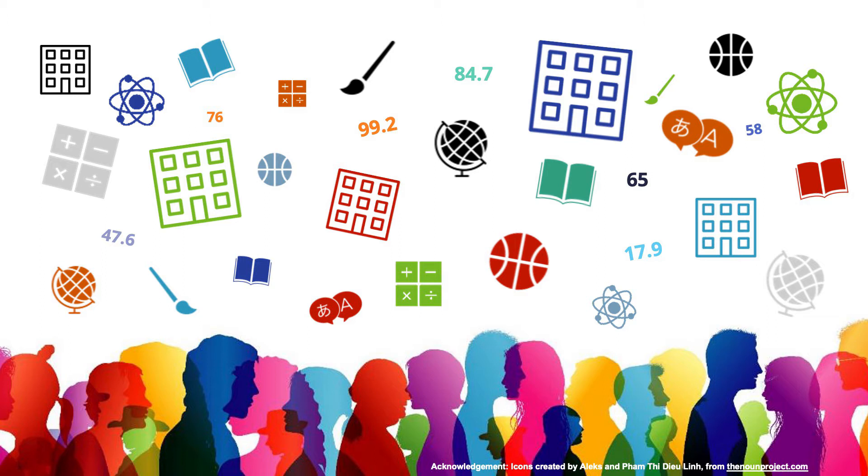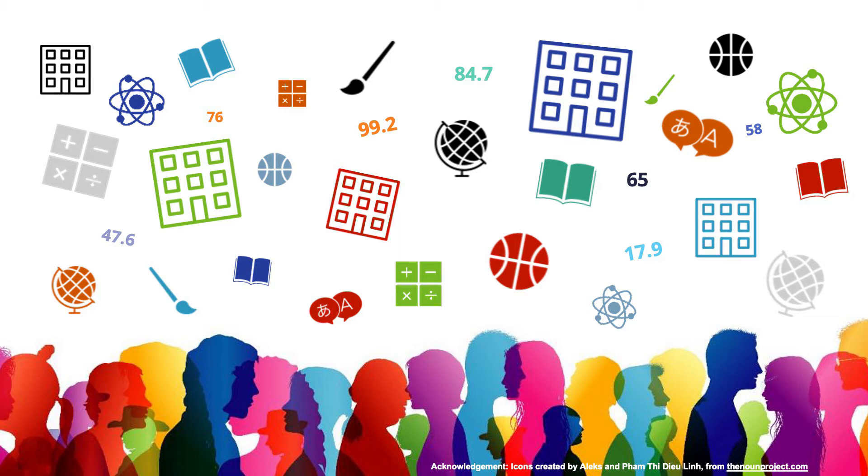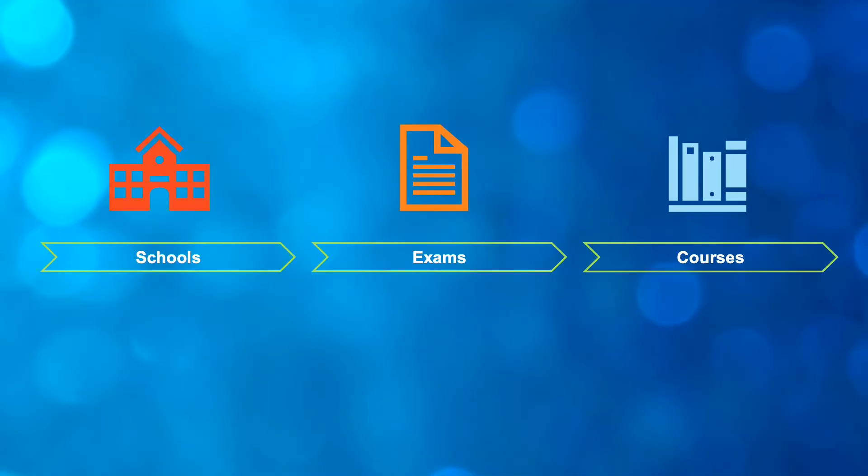I talked in a previous video about the ATAR that a lot of what we're doing is about comparing your performance this year to the performance of everyone else in WA. The marks adjustment processes take a look very specifically at a couple of different contexts in which you achieve your marks to make sure that you're not advantaged or disadvantaged by those different contexts. There are three contexts that we look at: schools, exams, and courses, and the three processes that we do look at each one of those in turn.